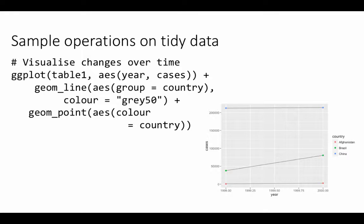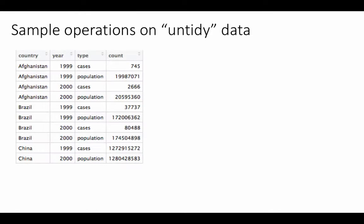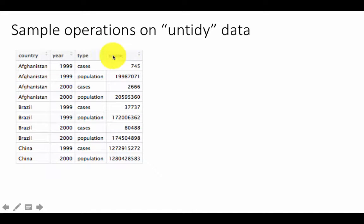Let us see what happens to these same operations when we try to perform them on untidy data. So our first untidy data set is Table 2. If you recall, Table 2 looked like this. It displayed exactly the same information that was contained in Table 1. But in Table 1, we had country, year, and then cases and population as two columns. This time, instead of representing cases and populations as two columns, for whatever reason, they have chosen to represent it like this.